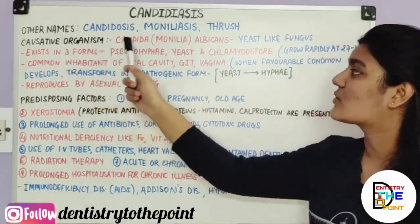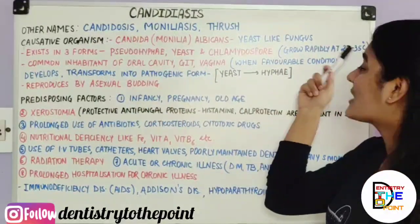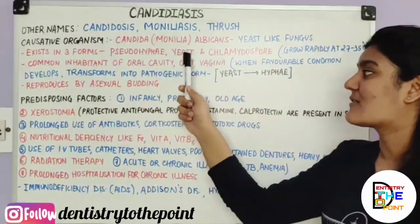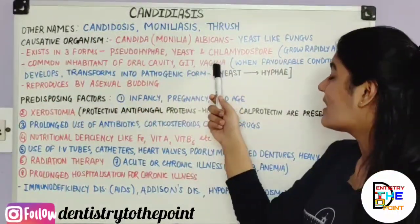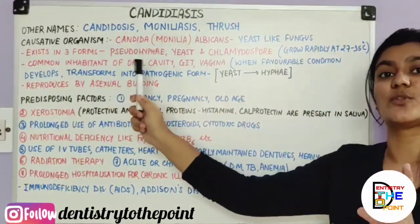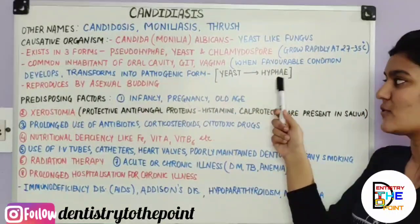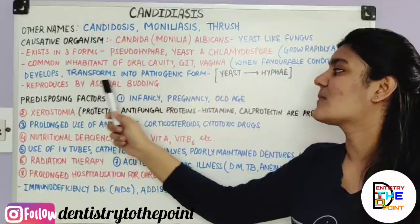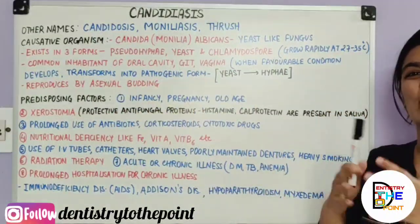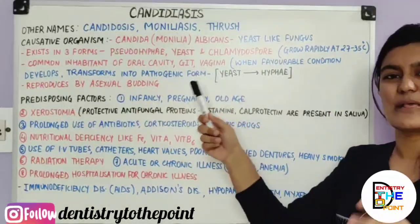The organism exists in three forms: Pseudo-Hyphae, Yeast, and Chlamydospore. It grows rapidly at 27 to 35 degrees Celsius. It is a common inhabitant of the oral cavity, gastrointestinal tract, and vagina. When favourable conditions develop, it transforms from its inactive yeast state into its pathogenic hyphal form, and it reproduces by asexual budding. These are your key rectification points for long-note answers.